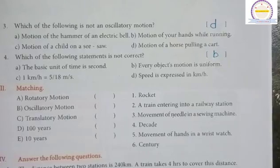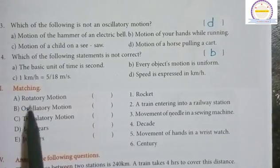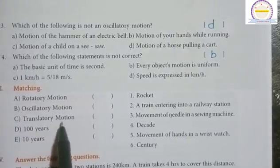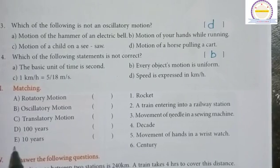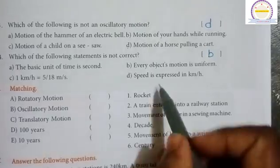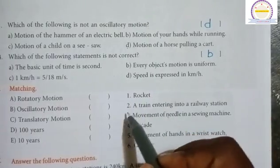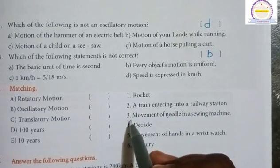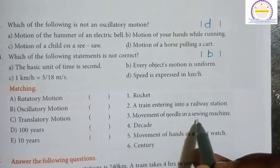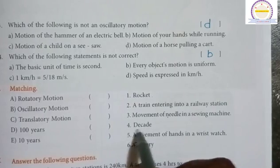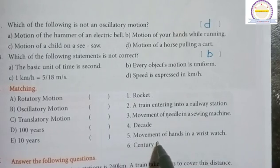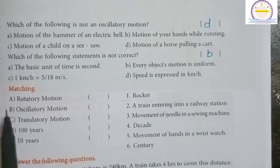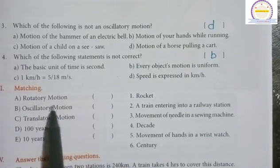Matching: A) rotatory motion, B) oscillatory motion, C) translatory motion, D) 100 years, E) 10 years. 1) Rocket, 2) a train entering into a rail station, 3) movement of needle in a sewing machine, 4) decade, 5) movement of hands in a wristwatch, 6) century.